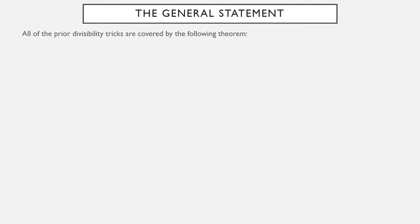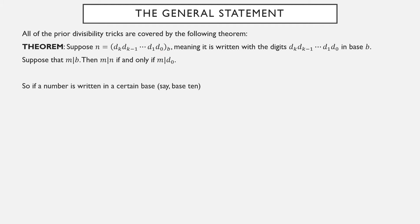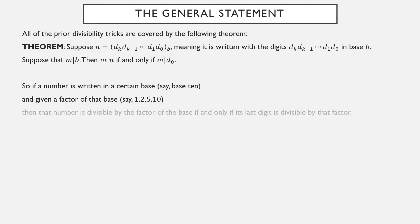Here's the general statement that corresponds to all of those tricks at once. Suppose n is written in base b, with digits d_k, d_{k-1}, and so forth. Suppose that m is a factor of the base. Then m is a factor of the number if and only if m is a factor of the last digit. So if a number is written in a certain base, say 10, and given a factor of that base — perhaps 1, 2, 5, or 10 — a number is divisible by that factor if and only if the last digit is divisible by that factor.